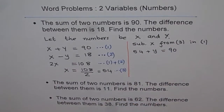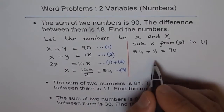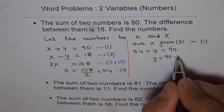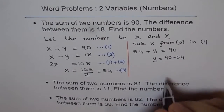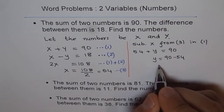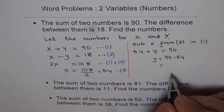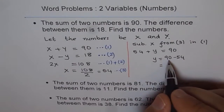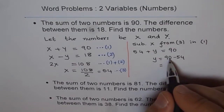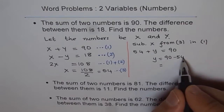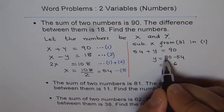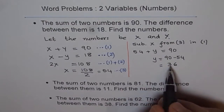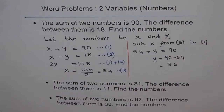Now I have one variable, so I can solve for Y. Y equals 90 minus 54. Doing the subtraction: 10 minus 4 is 6, and 8 minus 5 is 3, so you get 36. Therefore Y equals 36.